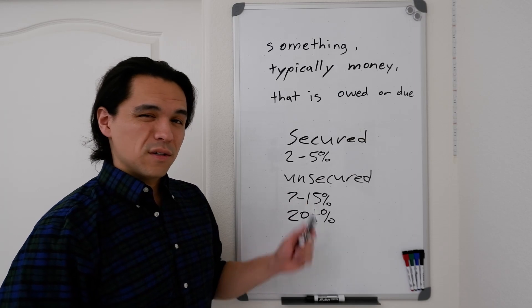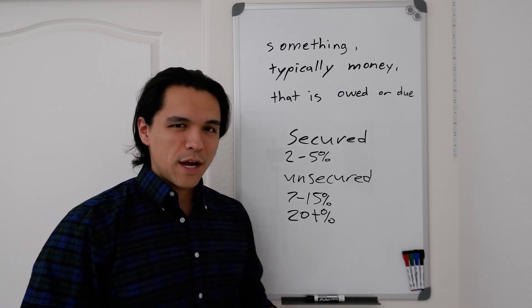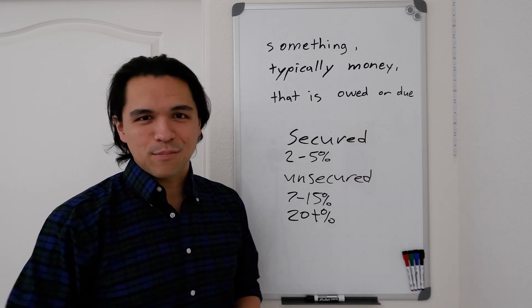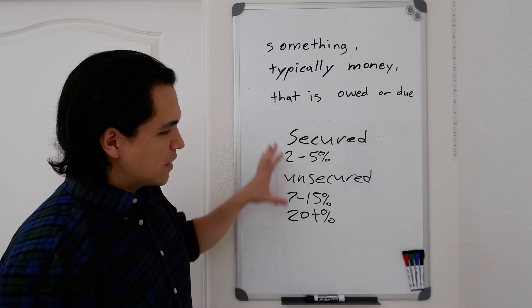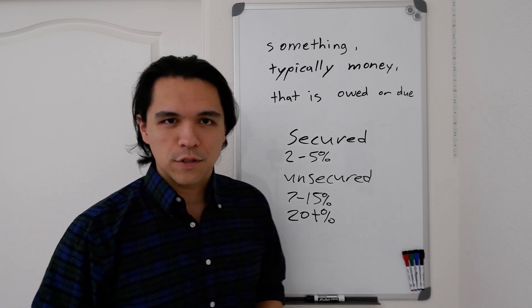On the unsecured side, typically these things can be a little bit more frivolous, whether it's trips or funding your Amazon purchases. Those classifications really differentiate what types of purchases we're making.